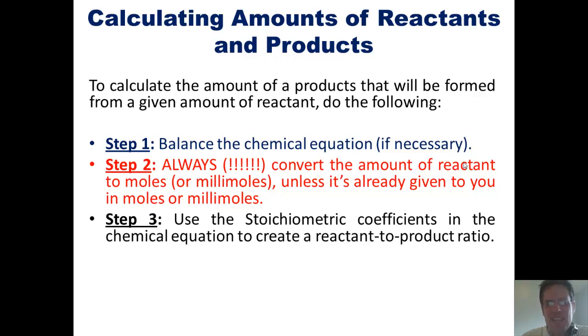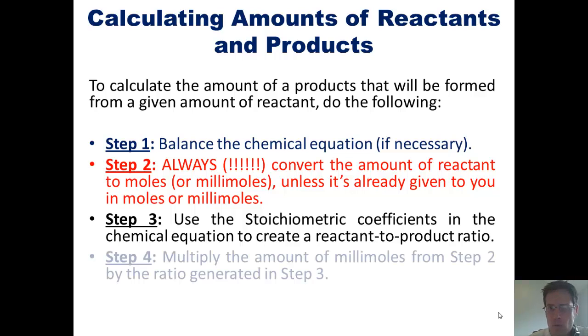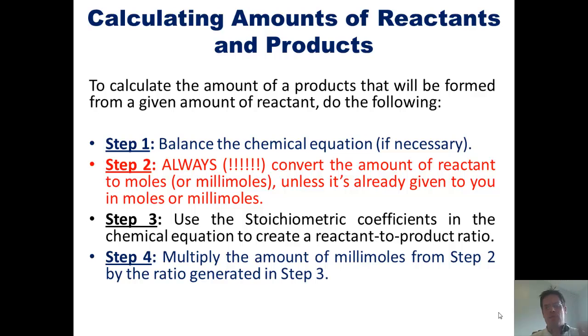Step three, use the stoichiometric coefficients in the balanced chemical equation to create a reactant to product ratio. And step four, multiply the amount of millimoles you got in step two by the ratio you made in step three.